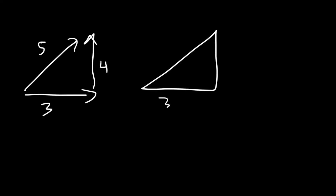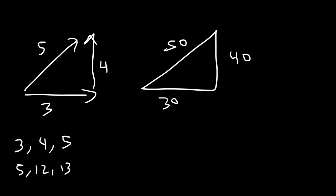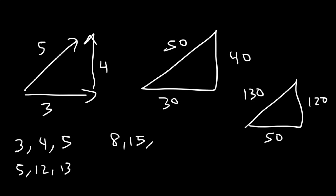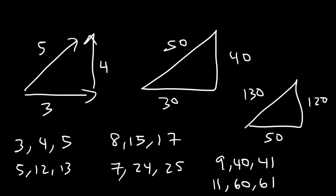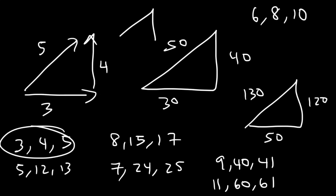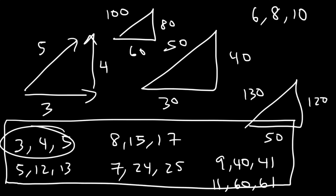The most common special right triangles are the 3-4-5, the 5-12-13, the 8-15-17, and the 7-24-25. Some rarer ones are the 9-40-41 and 11-60-61. You can see any ratio of these numbers — for example, the 3-4-5 triangle multiplied by 2 gives the 6-8-10 triangle. So if two sides are 60 and 80, the missing side is 100. Knowing these allows you to solve many right triangle problems quickly.